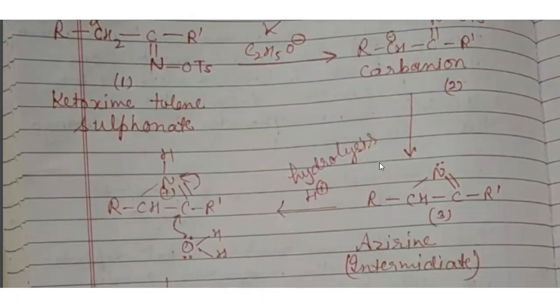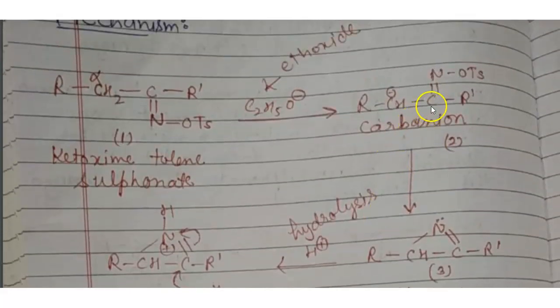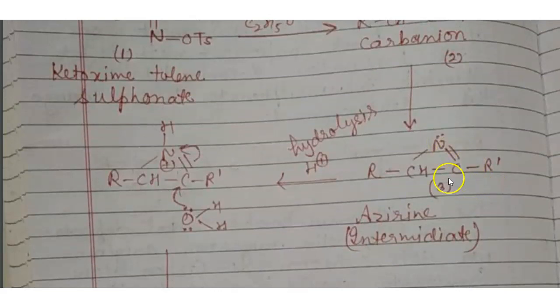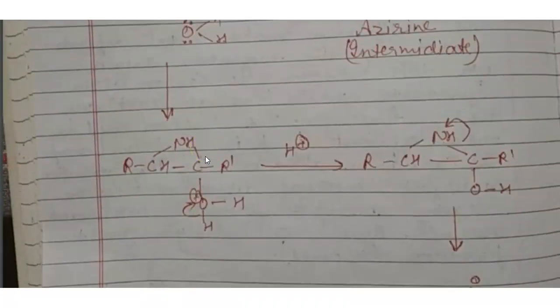And next, it is in this rearrangement here, in which this bond is shifted to this here. Negative ion shifted to this and OTS is removed and forms azirine as an intermediate. Then hydrolysis, we will get here a product. And in the next, for further rearrangement, this is removed, then we will convert this product.